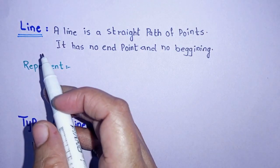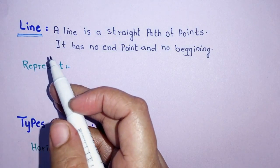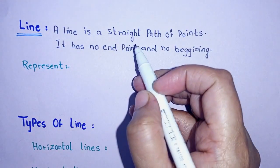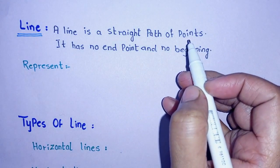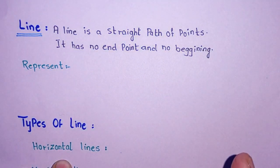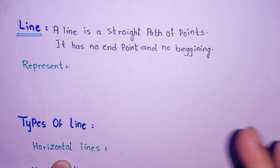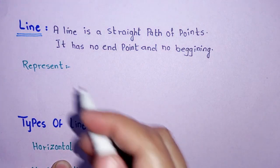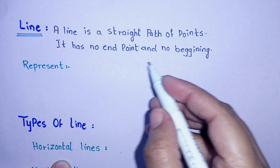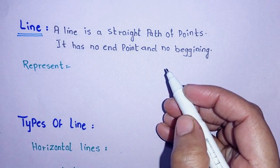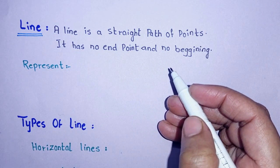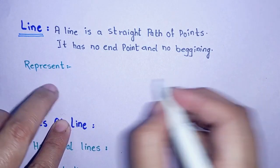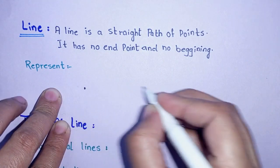The next concept is 'line'. You probably already have some idea of what a line is. A line is a straight path of points — it is a straight path between two points. It has no endpoint and no beginning point.